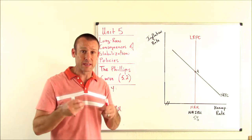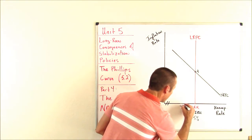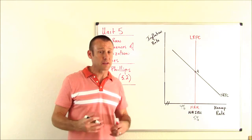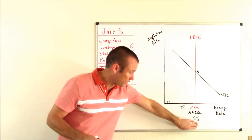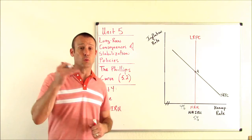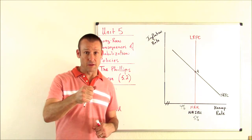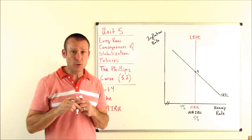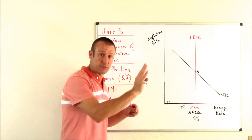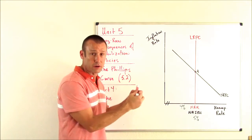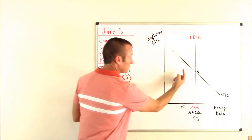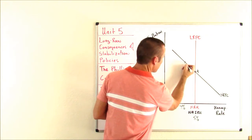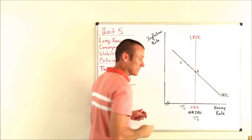We are actually at our true NAIRU of 5%, but the Fed thinks that's a recession — their target is 4%. So the Fed decides to do expansionary monetary policy: increase the money supply, lower interest rates, increase spending, and shift AD to the right. Shifting AD to the right causes a movement along the SRPC — inflation goes up and unemployment goes down toward point B.